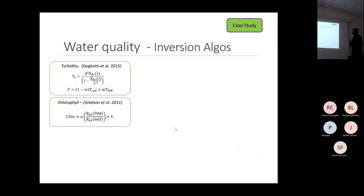For the inversion algorithms, we used algorithms from the literature. For turbidity, we used the Dogliotti two-band switching algorithm — depending on whether it is high or low concentration, it uses red or near-infrared bands.